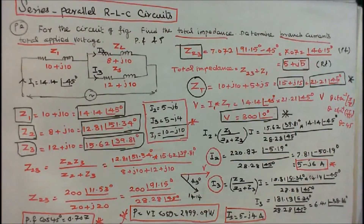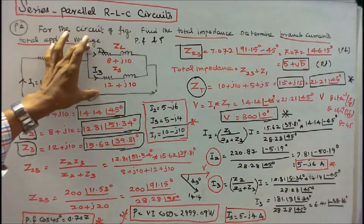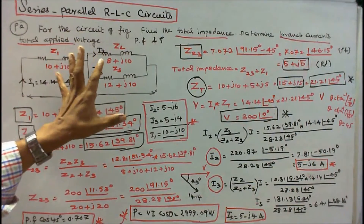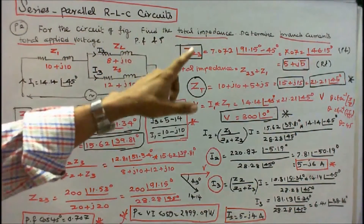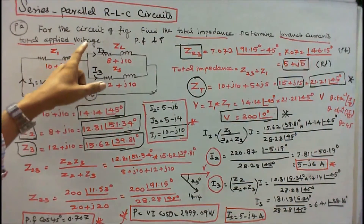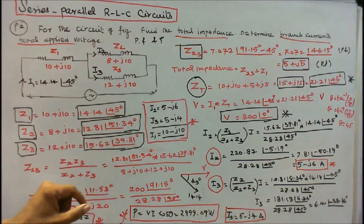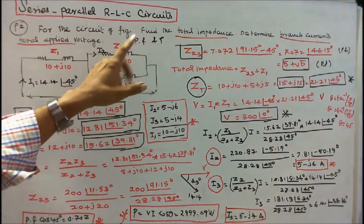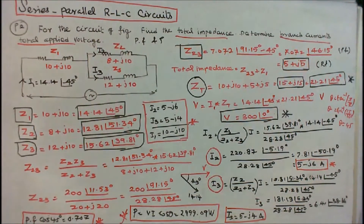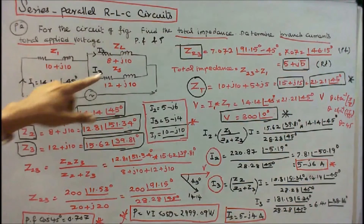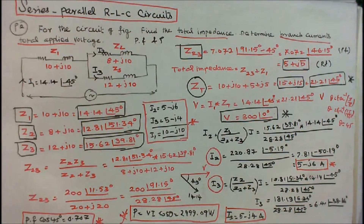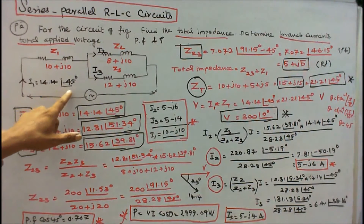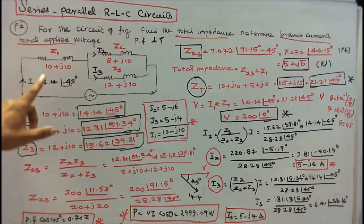Problem number 2. For the circuit of figure: find the total impedance, determine branch currents I2 and I3, total applied voltage, power factor, and real power P. Here 3 impedances are connected as shown in figure. The total current I1 is given as 14.14∠−45°, which in rectangular form is 10 − j10.